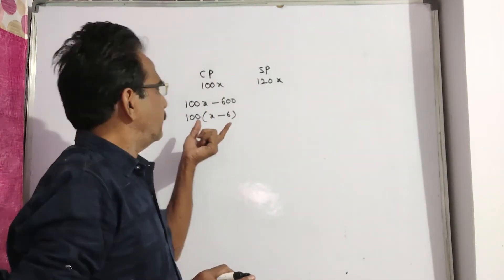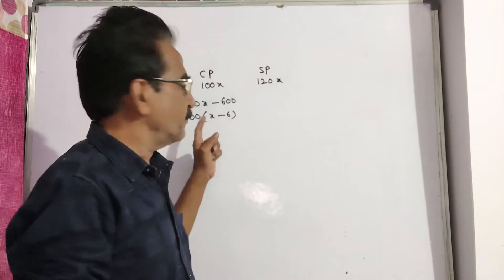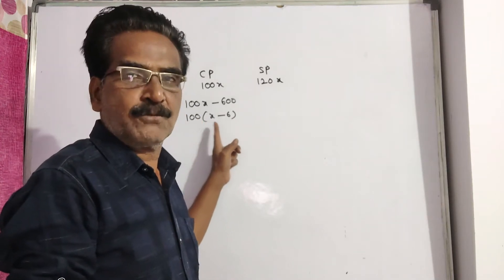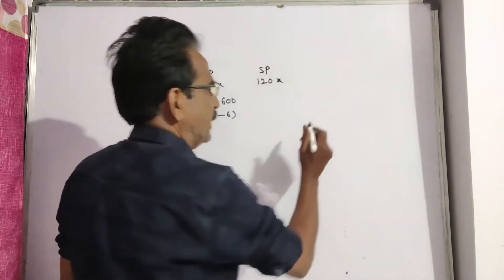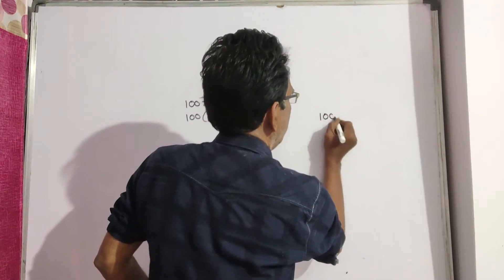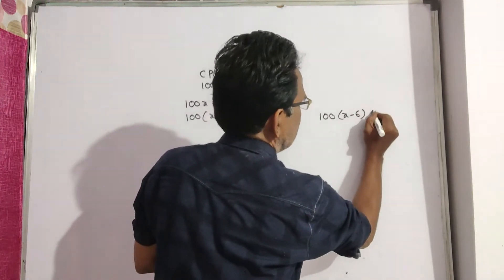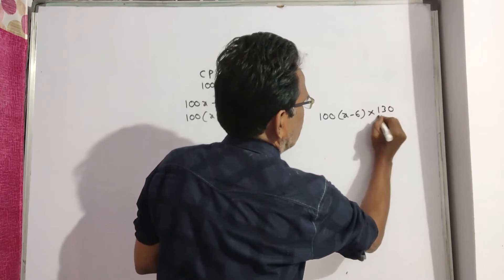30% profit on this new cost price. Then the sold price will be 100 into x minus 6. This is cost price into 30% profit.